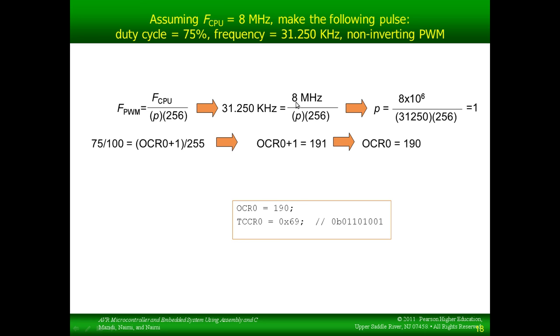If we wanted to get this PWM frequency, then we have a prescaler value of 1 for this clock frequency. Now, we need to know what value to put in the output compare register in order to get a duty cycle of 75%. So, here, again, is an equation relating output compare register to duty cycle. Rearranged to solve for output compare register, we get 190.